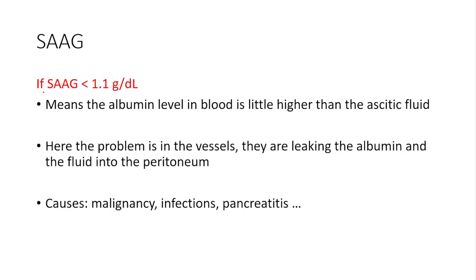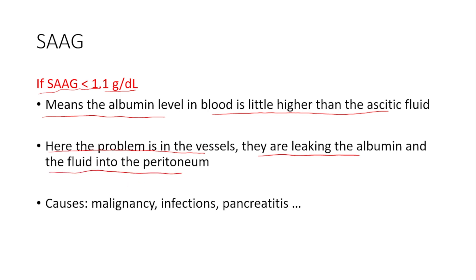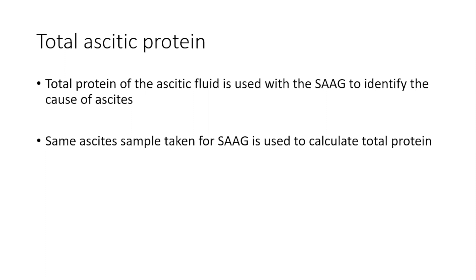If the SAAG value is less than 1.1 g/dL, it means the albumin level in the blood is only a little higher than in the ascitic fluid, meaning the ascitic fluid has a lot of protein. This indicates that the vessels are the problem — they are leaking albumin and fluid into the peritoneum. Causes include malignancy affecting the peritoneum or GI tract, infections affecting the vascular walls, and pancreatitis.